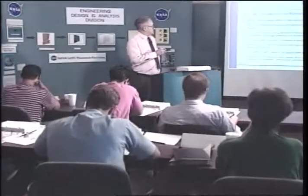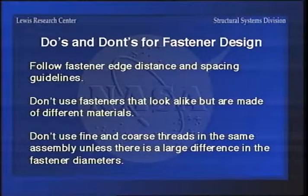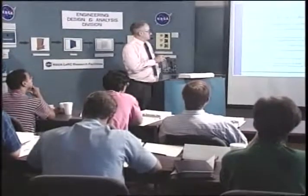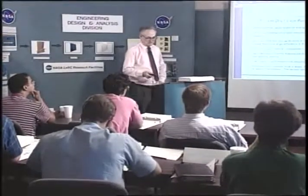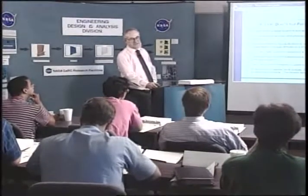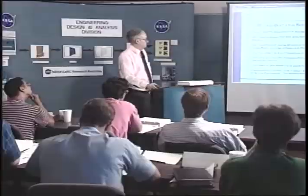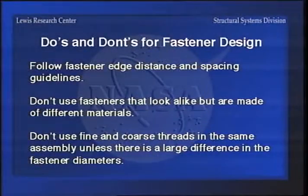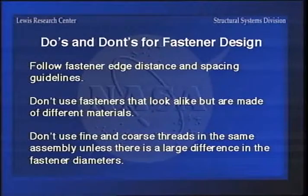Follow the edge distance and spacing guidelines on fasteners. You can temper this, but one of the things you don't do is put a fastener so close to the edge that if the tolerance goes against you when the hole is drilled, you'll have it pushing out on the edge. Don't use fasteners that look alike but are made of different materials. Don't use 300 stainless and A286 stainless the same size with the same head so you can't tell the difference between them. And don't use fine and coarse threads in the same assembly unless there's a big difference in the fastener diameter so it's not possible to get them in the wrong holes.